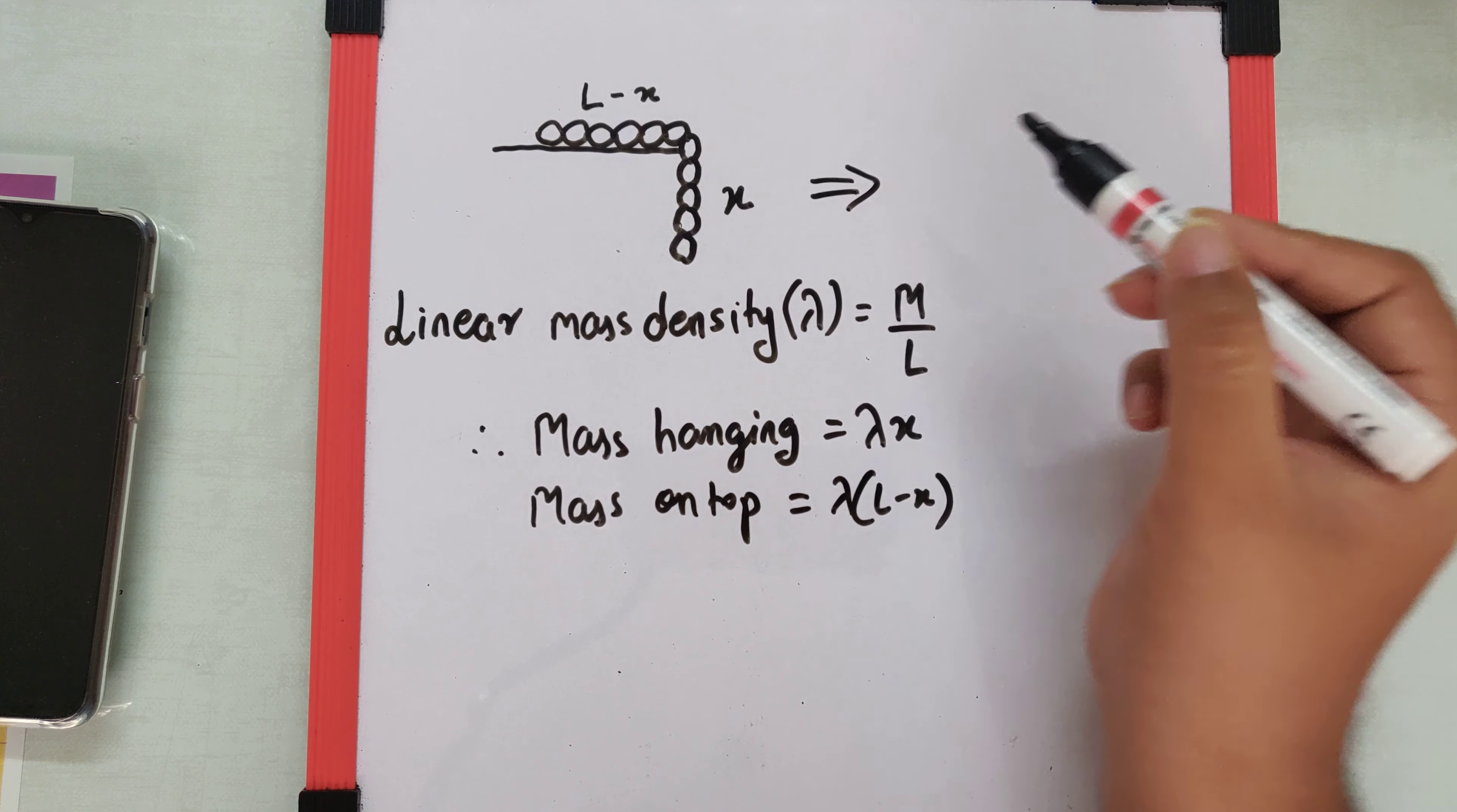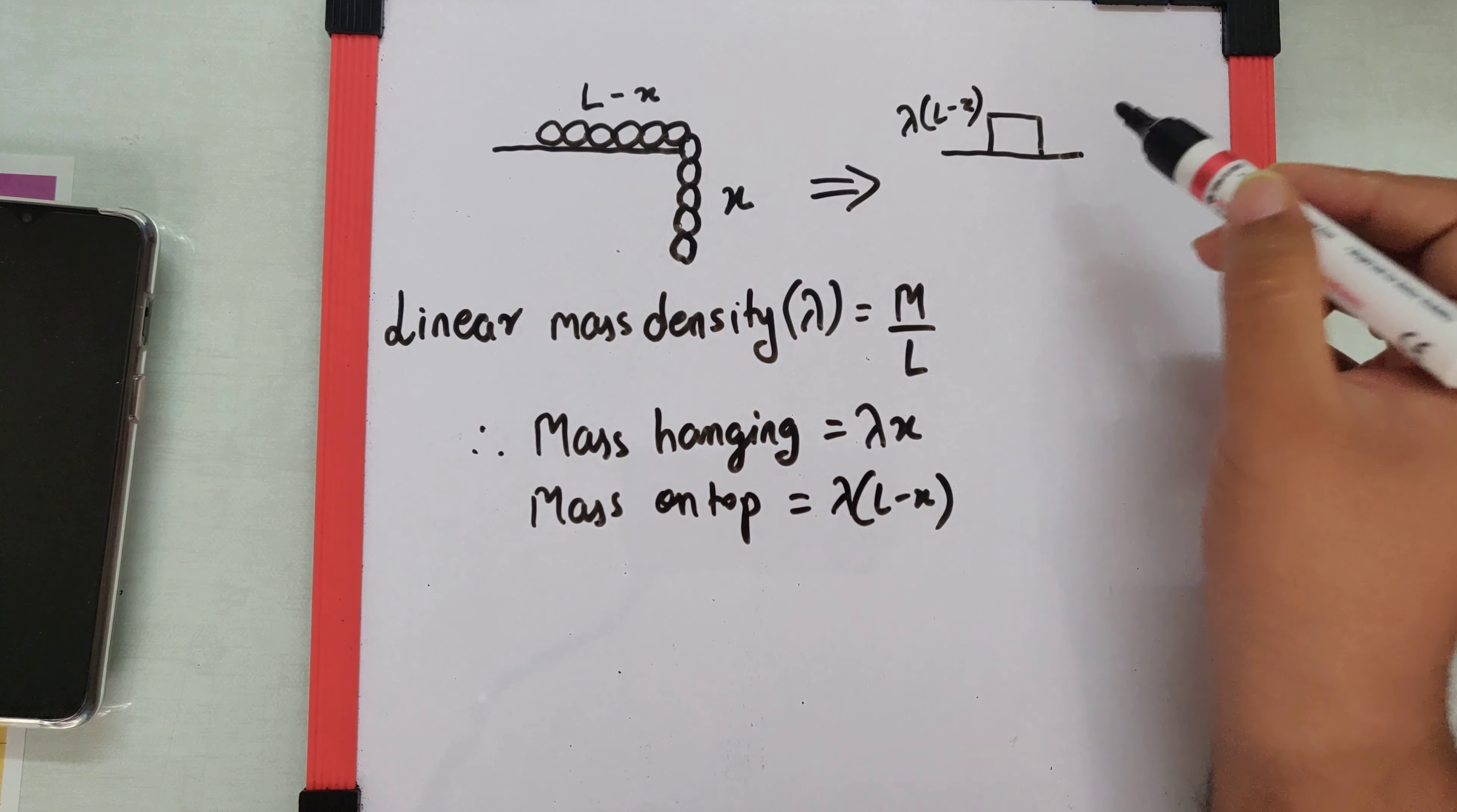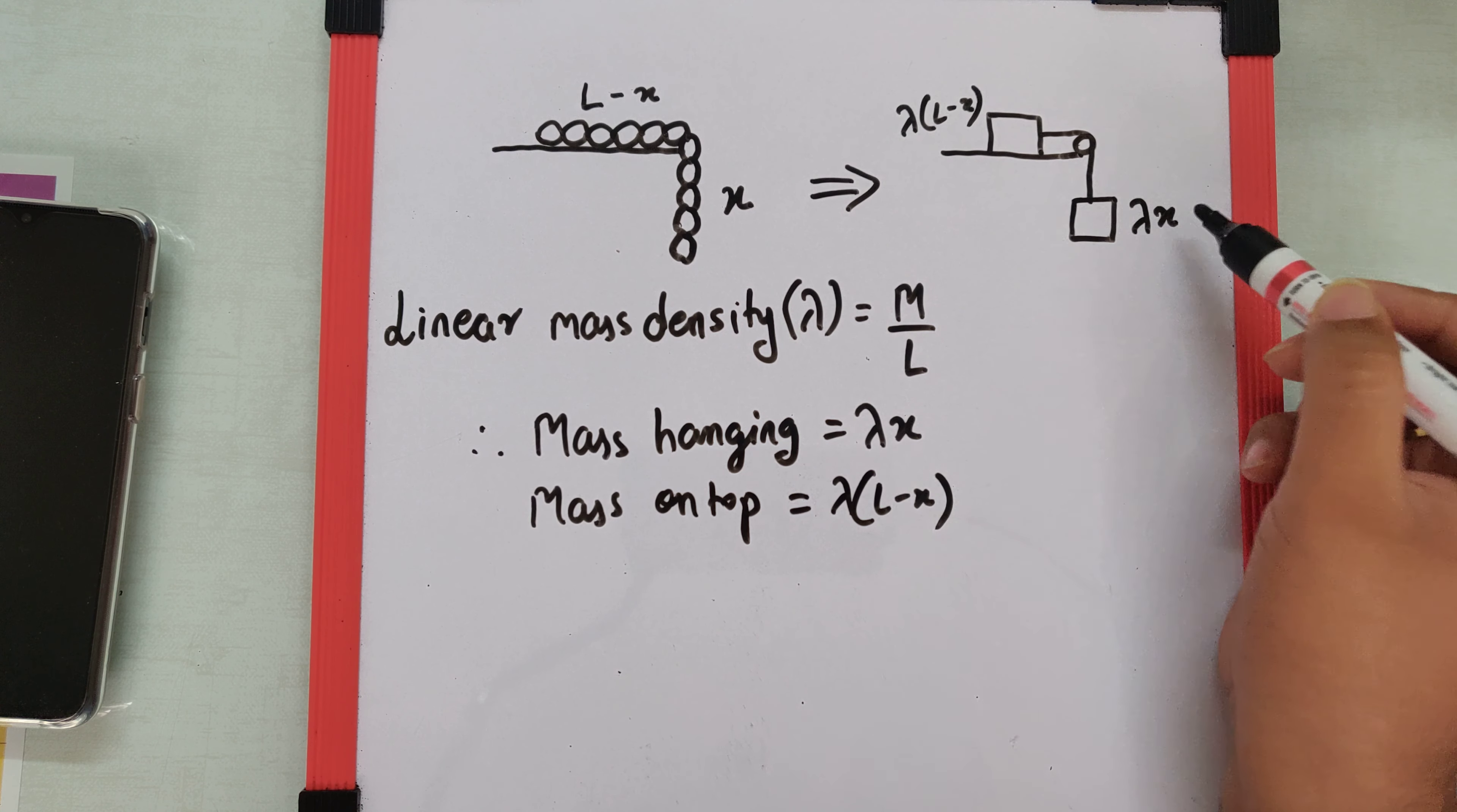So this diagram can be replaced like this: there is a block which has a mass λ(L minus x) attached with a wire and a pulley. The pulley is frictionless and the wire is weightless, so there is a mass hanging which is λx.